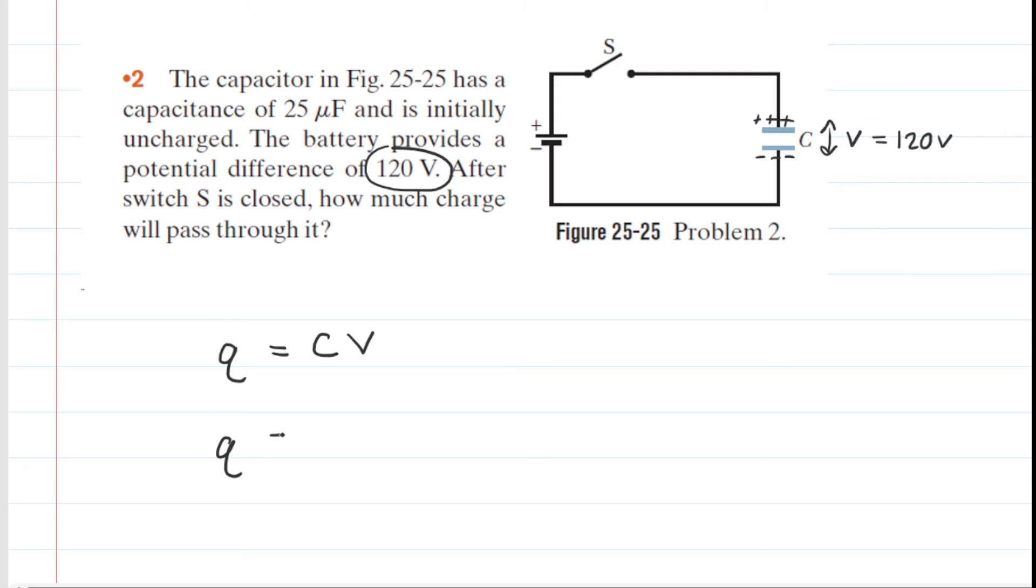So we are given the capacitance. It's 25 microfarads. We can change that into farads by multiplying by 10 to the negative sixth. And then we just multiply that by the potential difference between the two plates. So let's go ahead and simplify this.